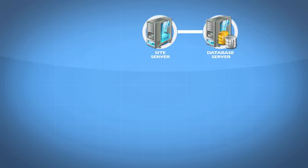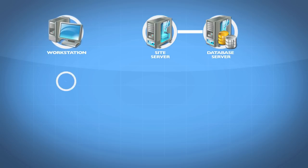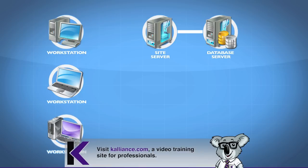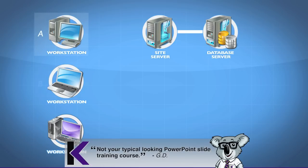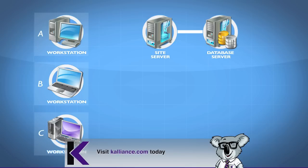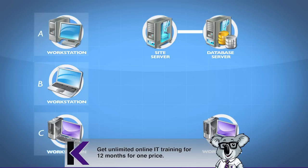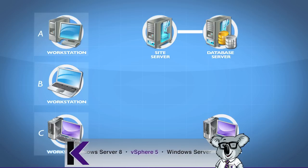Somewhere out on our network are computers — we've got some servers, some desktops, some laptops, and a number of different devices that exist on the network. Some of these devices might be on subnet A, some on subnet B, some on subnet C. Some of them might be in a completely different branch office location on a totally different network with different sets of subnets and IP ranges.